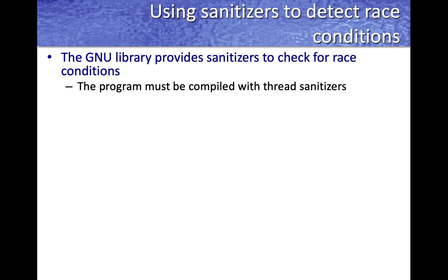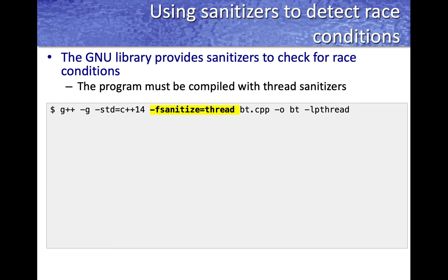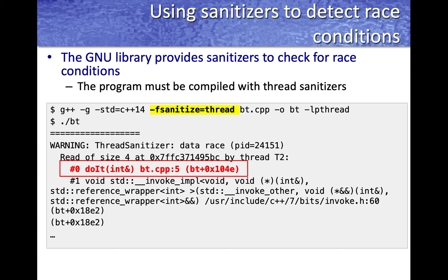The compiler collection and libraries provide what are called sanitizers or automatic checkers to ensure programs do not suffer from race conditions. To use sanitizers, the program must be recompiled with thread sanitizers. For example, when compiling with the g++ compiler, you add the flag -fsanitize=thread to check for race conditions. When you run the program, if there are race conditions, the libraries will output errors and warnings showing where the race condition occurred — for example, it might say there is a race condition on thread two in a method called do-it at line number five, so you can inspect that line and fix the race condition.